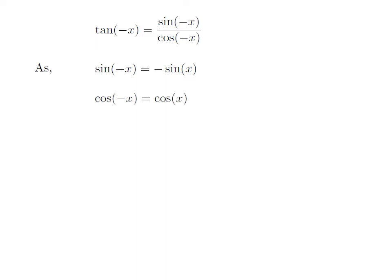We also know the trigonometry identity cosine of minus x is equal to cosine of x. The proof of this trigonometry identity has been explained in the video appearing in the upper right corner. The URL of the video has been mentioned in the description section as well.